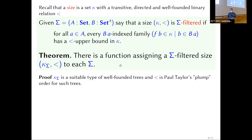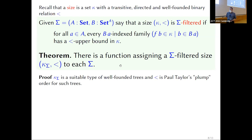There's one subtlety: what order do you put on the well-founded trees? We use the plump ordering between well-founded trees, developed in Paul Taylor's constructive theory of ordinals called plump ordinals. The details are in the paper, but there is a well-founded ordering on the trees — maybe not the first thing you think of — which works very nicely in this setting to give us enough upper bounds.